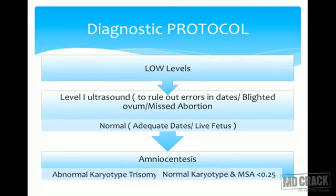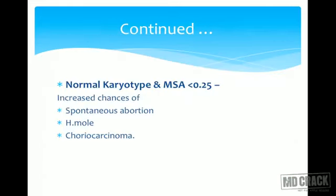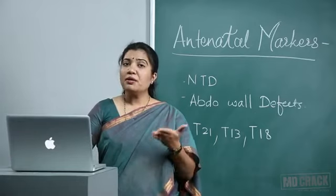If ultrasound is normal, amniocentesis can be advised. Amniotic fluid containing fetal cells (skin cells, respiratory tract cells, fibroblasts) is collected, cultured, and sent for karyotyping. This confirms whether the fetus has a chromosomal abnormality. If no chromosomal abnormality is found but MSAFP levels are still less than 2.5 MoM, there are chances of spontaneous abortion, hydatidiform mole, or choriocarcinoma. Since mole has been ruled out on ultrasound, the patient should be warned that the pregnancy may abort.